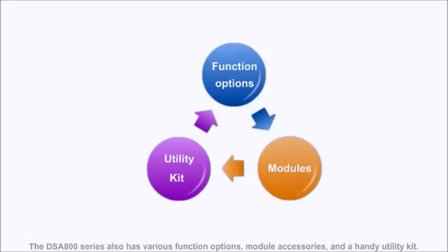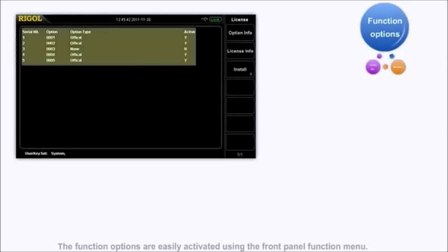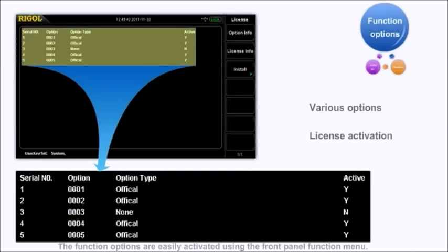The DSA800 series also has various function options, module accessories, and a handy utility kit. This enables you to configure your instrument with the features you need to meet your application requirements. The function options are easily activated using the front panel function menu. Currently, the DSA800 series supports five function options.